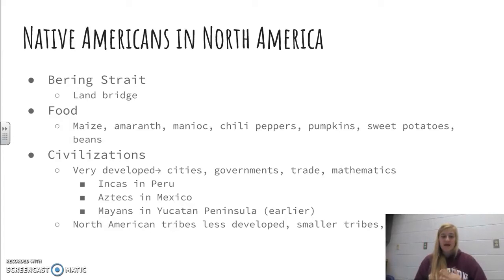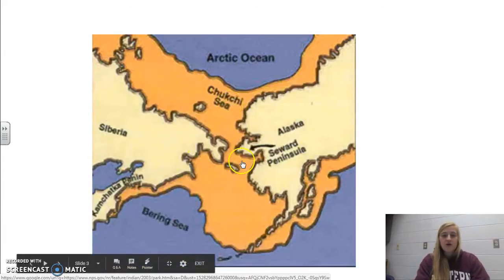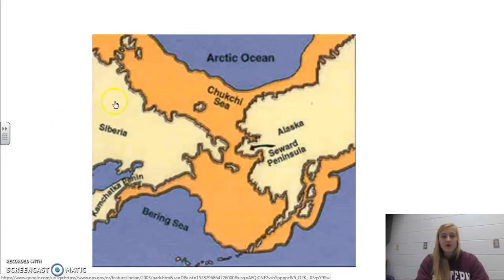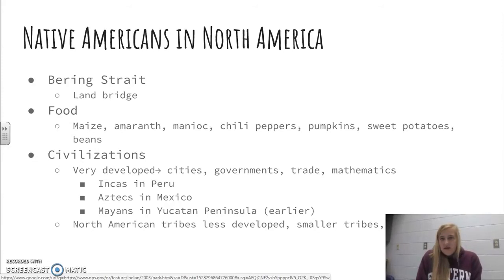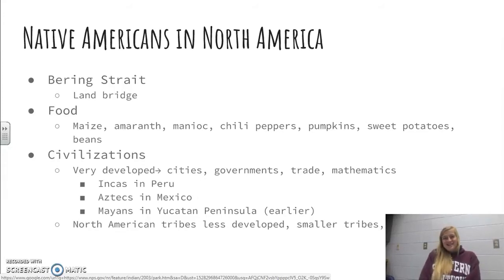The Bering Strait is the idea that during the Ice Ages, the Arctic Ocean and the Bering Sea froze over, creating land that could be walked over from the Siberia area into what we now know as Alaska. Natives could then travel down through the continent into what is now America and South America. More than 40,000 years ago, Natives came to America via the Bering Strait, eventually making it all the way to the tip of South America. The first immigrants here hunted animals — they were hunter-gatherers completely.